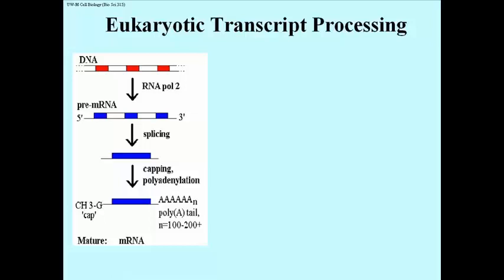Most eukaryotes will produce poly-A tails of 150, 200, or more nucleotides. Only after all this processing and export from the nucleus to the cytoplasm is this a mature messenger RNA, ready to associate with ribosomal subunits and to begin being translated.